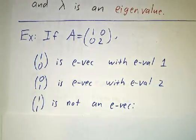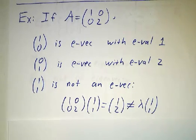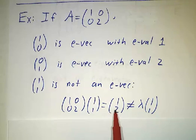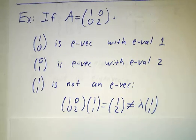On the other hand, (1, 1) is not an eigenvector at all. If you multiply the matrix by (1, 1) you get (1, 2), and that's not a multiple of (1, 1). In general, most vectors are not going to be eigenvectors, and most numbers are not going to be eigenvalues. Only very special vectors and very special numbers are eigenvalues and eigenvectors.